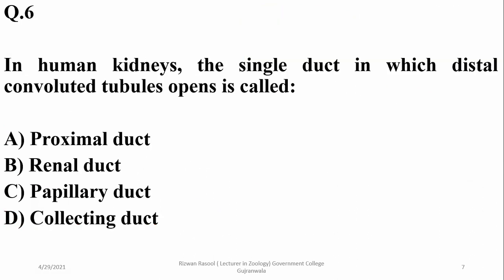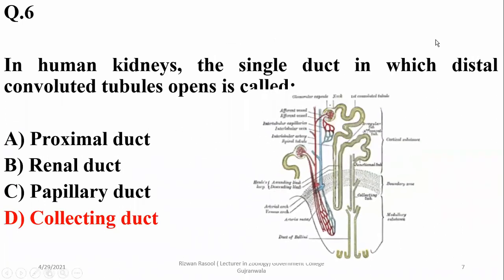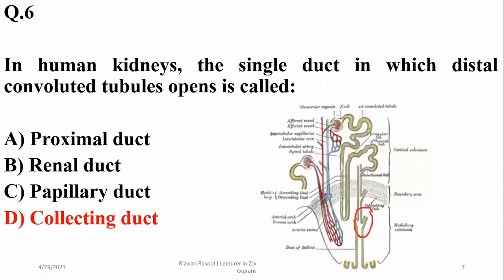In human kidneys, the single duct into which distal convoluted tubules open is called the collecting duct. Collecting ducts share openings from many nephrons.